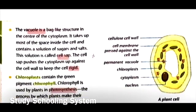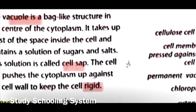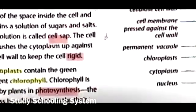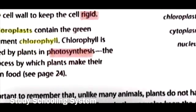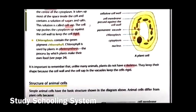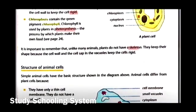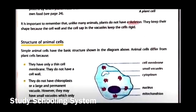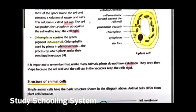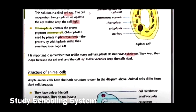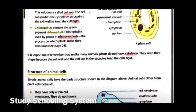The next word is vacuole — a bag-like structure in plant cells made up of sugars and salts; the whole solution is called cell sap. The next word is cell sap, then rigid, and the last word is photosynthesis — the process by which plants make their own food. The final word is skeleton. If there are any other difficult words, underline them and write them three times. Do read this lecture again — that's it, have a good day and I'll see you in the next lecture!